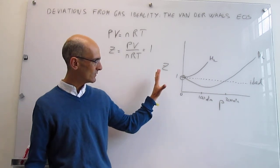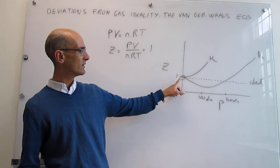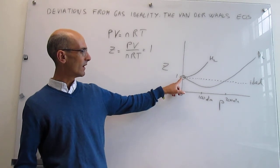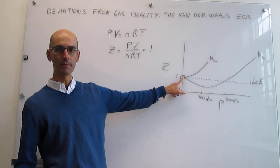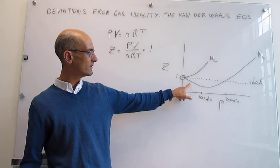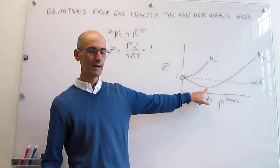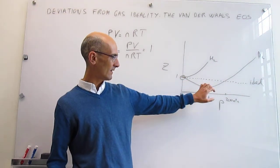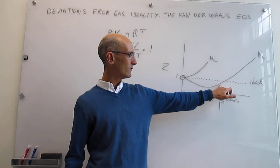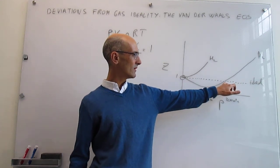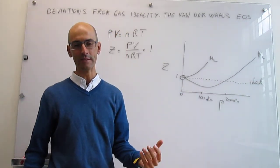This graph shows exactly that in the case of nitrogen, where at low pressure you have ideal behavior. If you increase the pressure, attractions are important in that range, but if you increase the pressure a lot, repulsions take over.